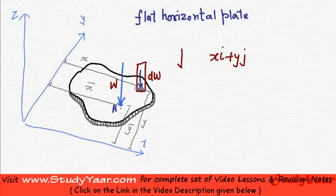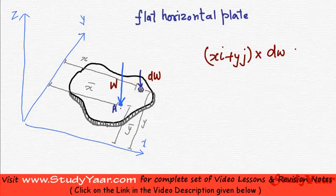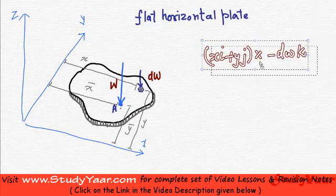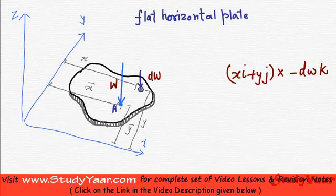So what is my dw vector? My dw vector is going to be cross dw and this direction is minus k, so it is going to be cross minus dw k. So let us write it like this. So this is my moment due to element e1. Let us call this as element e1.